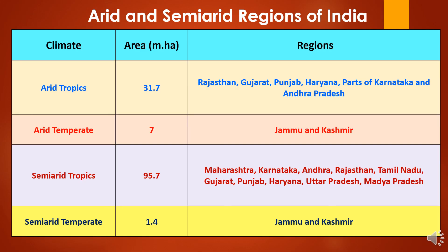Now to study the arid and semi-arid regions of India. The arid tropics climate covers 31.7 million hectares and includes Rajasthan, Gujarat, Punjab, Haryana, and parts of Karnataka and Andhra Pradesh. The arid temperate zone covers 7 million hectares, covering Jammu and Kashmir. The semi-arid tropics cover around 95.7 million hectares, including Maharashtra, Karnataka, Andhra Pradesh, Rajasthan, Tamil Nadu, Gujarat, Punjab, Haryana, Uttar Pradesh, and Madhya Pradesh. The semi-arid temperate region covers 1.4 million hectares, also in Jammu and Kashmir.